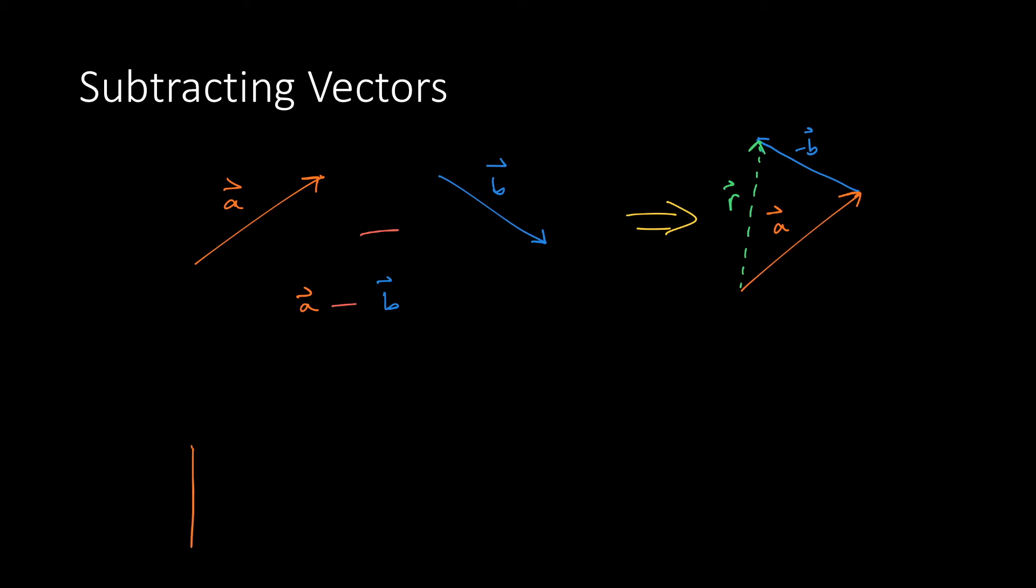Now let us look briefly at an example involving three vectors. Here we have vector a plus vector b minus vector c. We will add vector a and vector b normally using the tip-to-tail method.